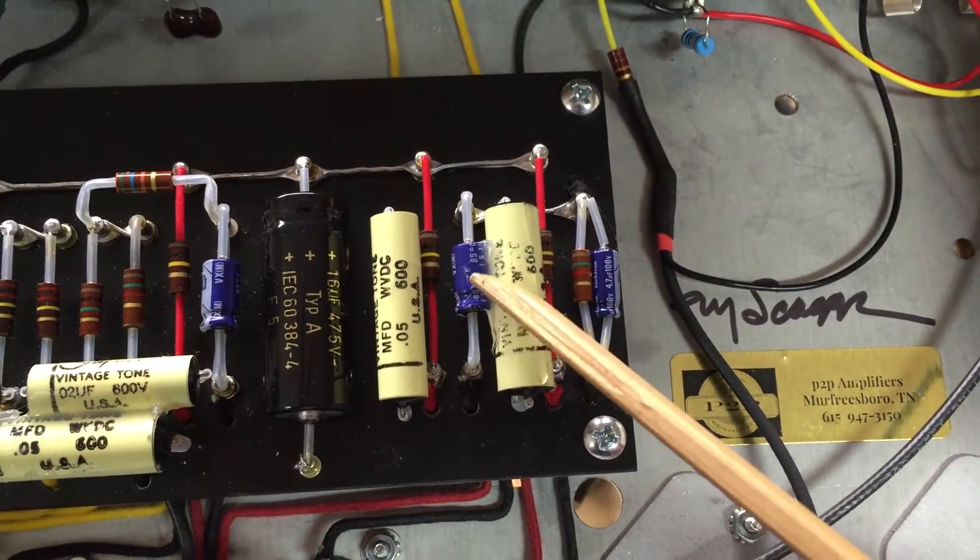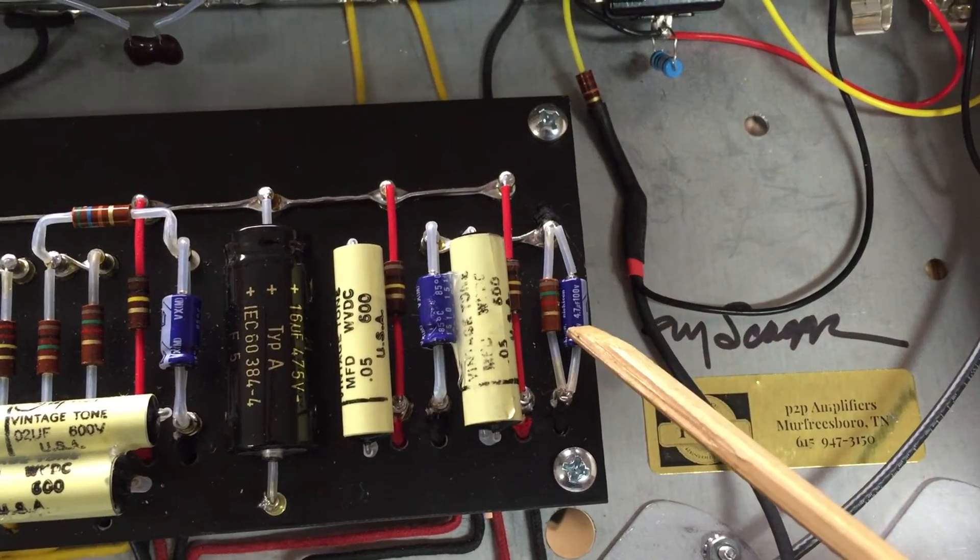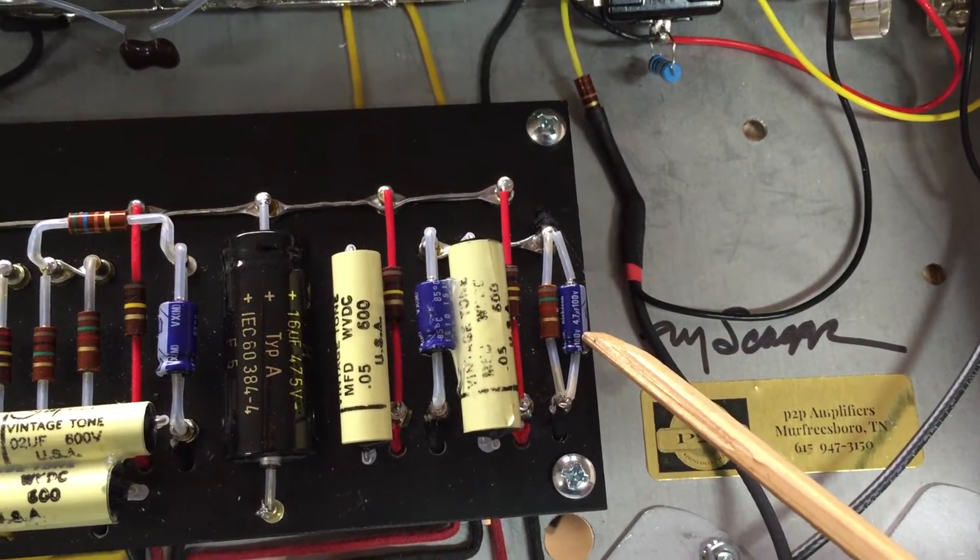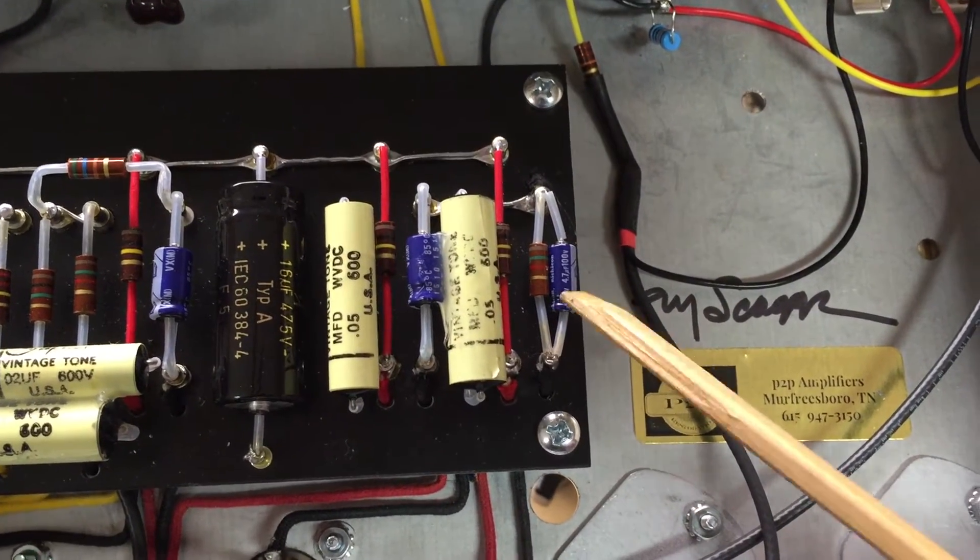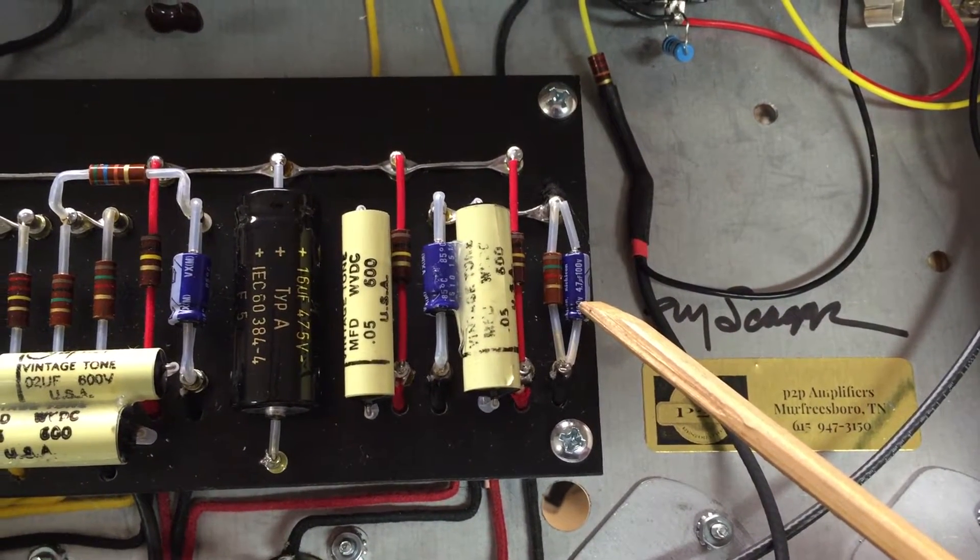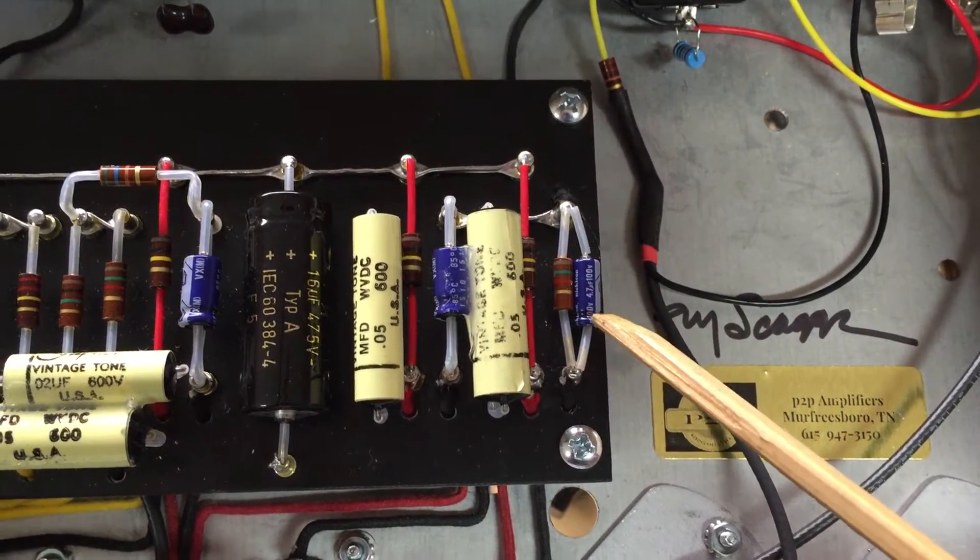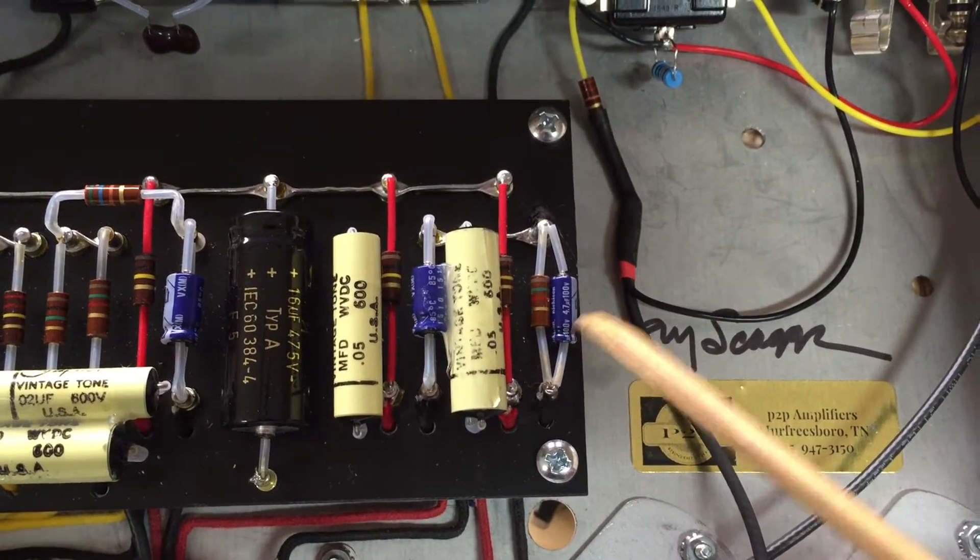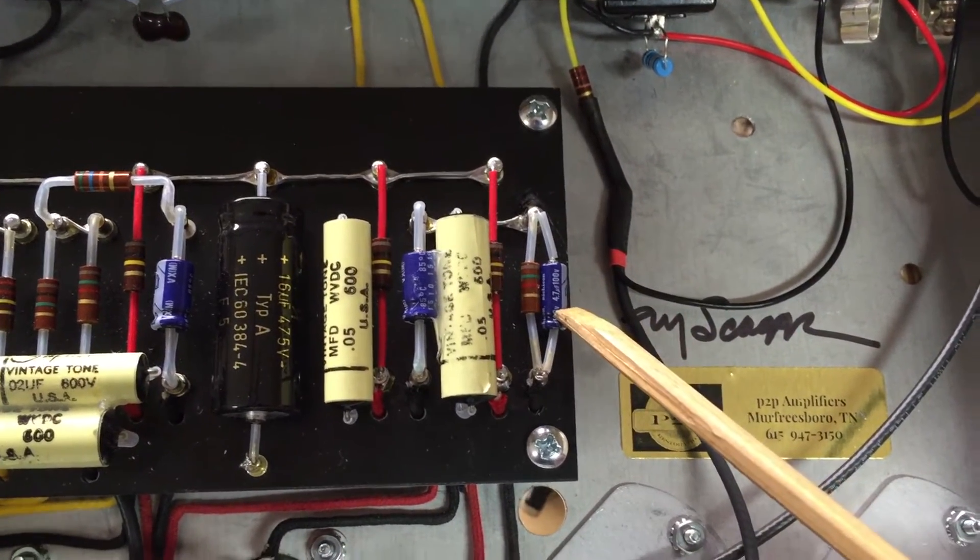Other change to this circuit is these little electrolytics right here. This is the first bypass capacitor. The stock one that goes in there is a 22 microfarads at 50 volts. This is a 4.7.